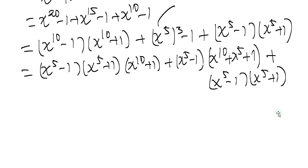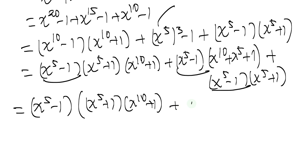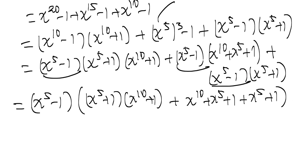Now we see that x to the 5 minus 1 appears in every term. So we can factor out (x to the 5 minus 1), which multiplies the bracket: (x to the 5 plus 1)(x to the 10 plus 1) from the first term, plus (x to the 10 plus x to the 5 plus 1) from the middle, plus (x to the 5 plus 1) from the last term.